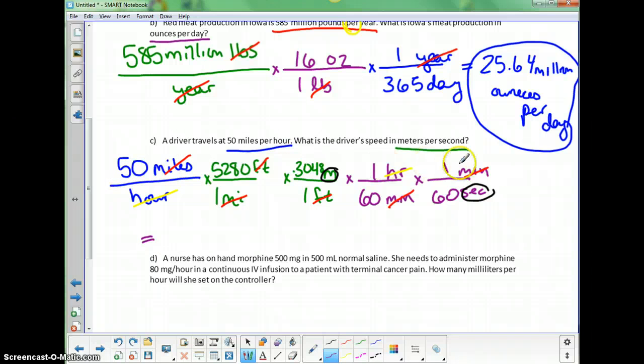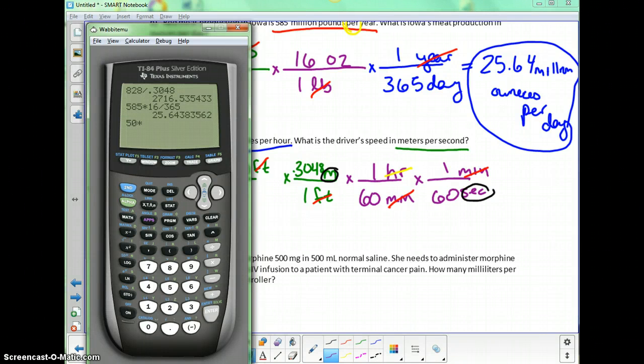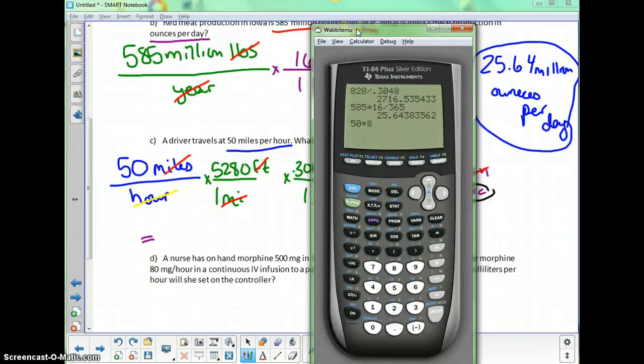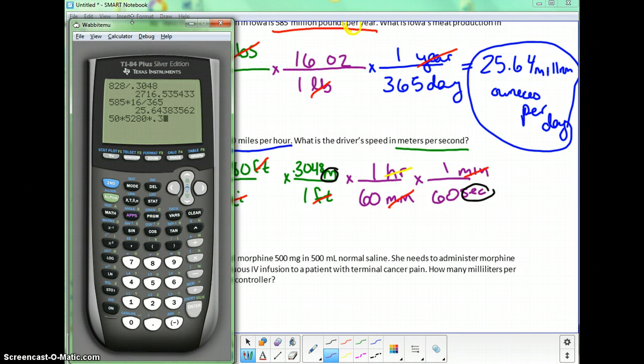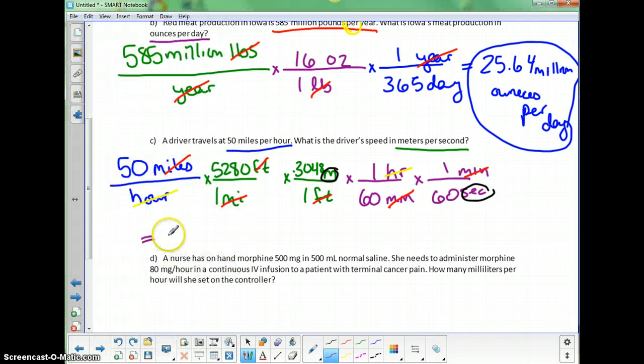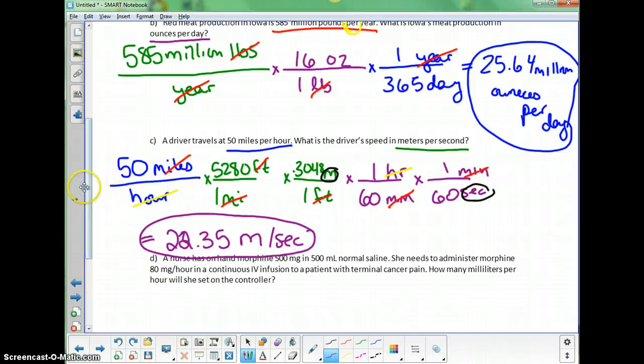We're going to multiply all the numbers on the top and divide by all the numbers on the bottom. So I start with 50 times 5,280 times 0.3048 divided by 60 and divided again by 60. The answer is 22.35 meters per second.